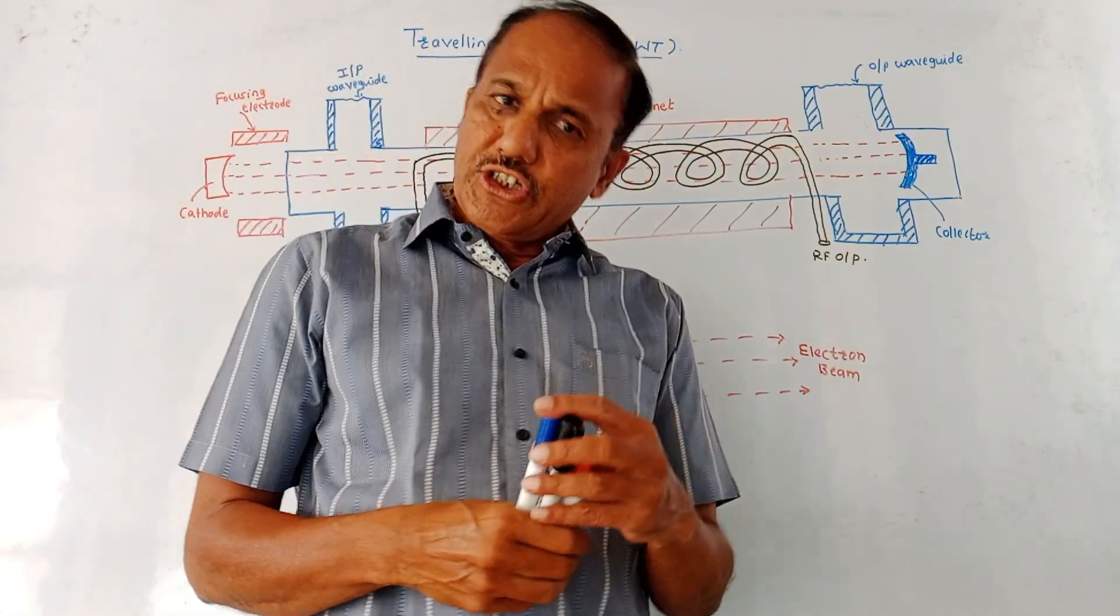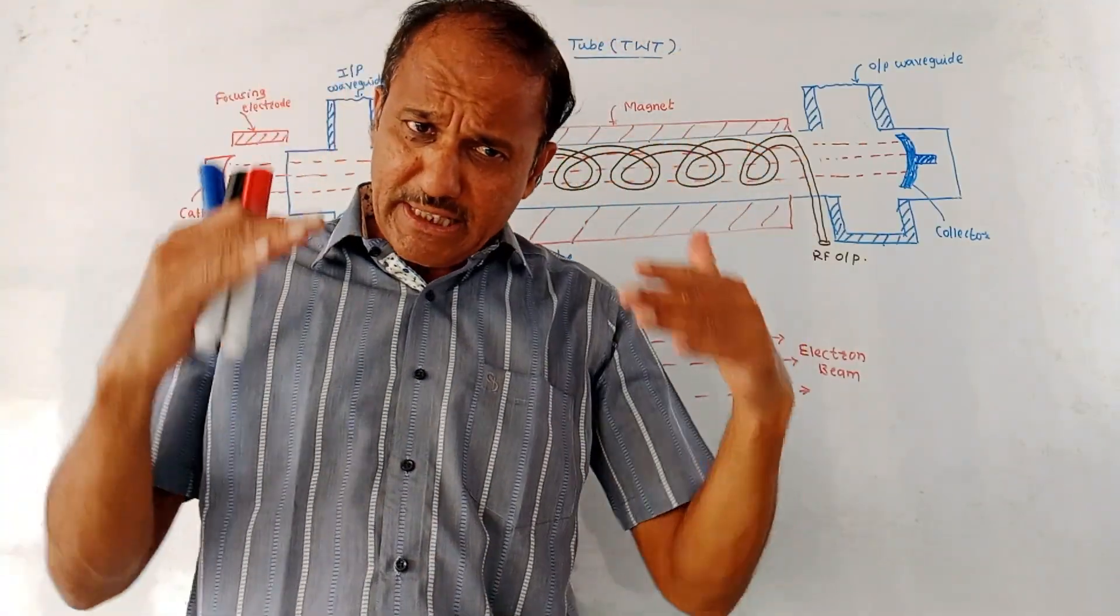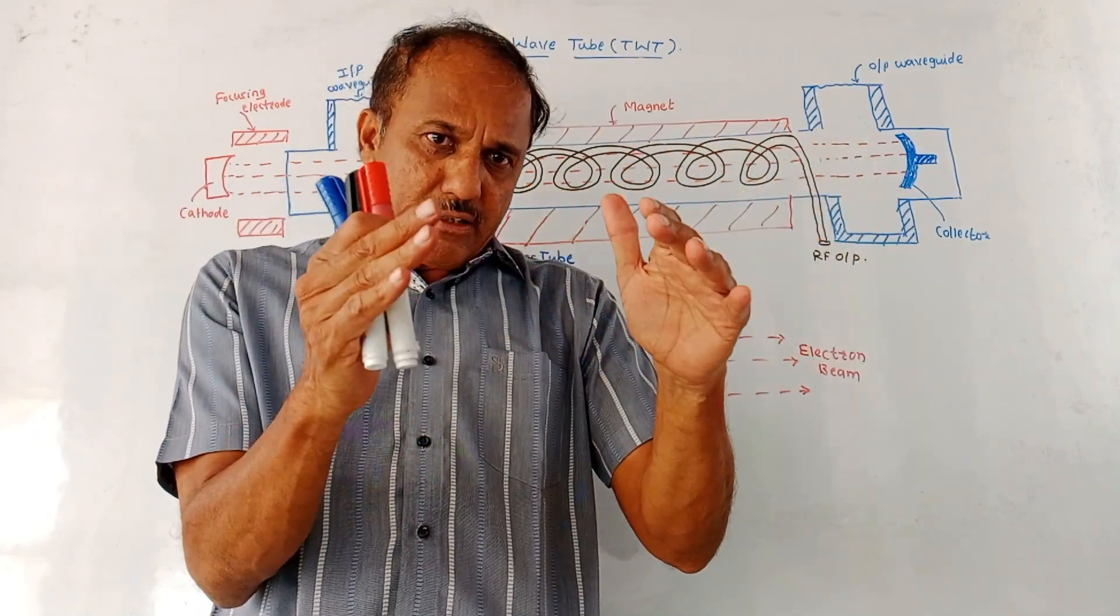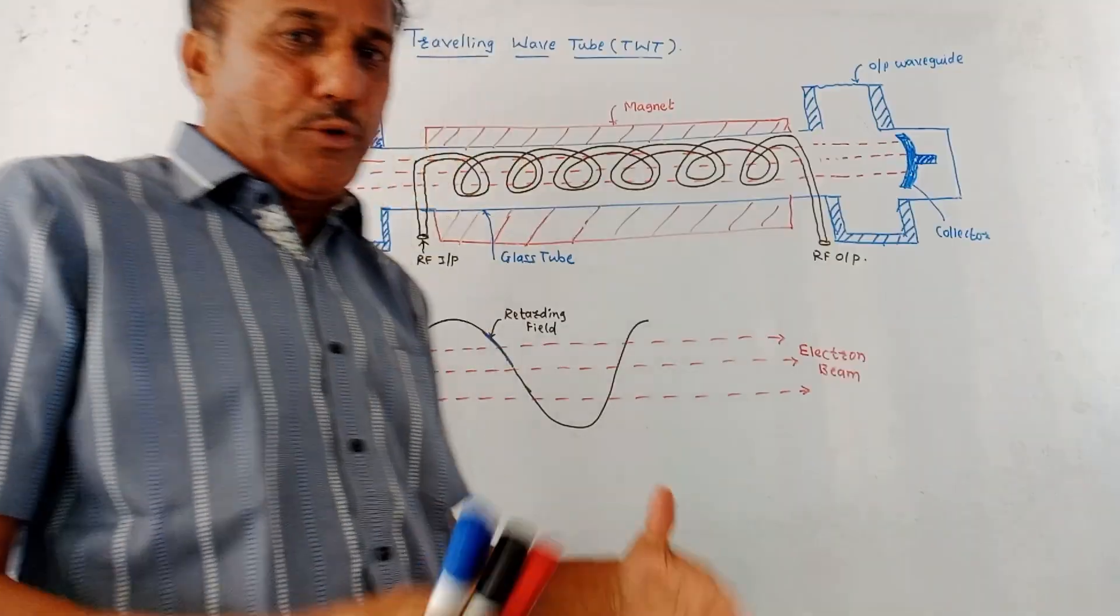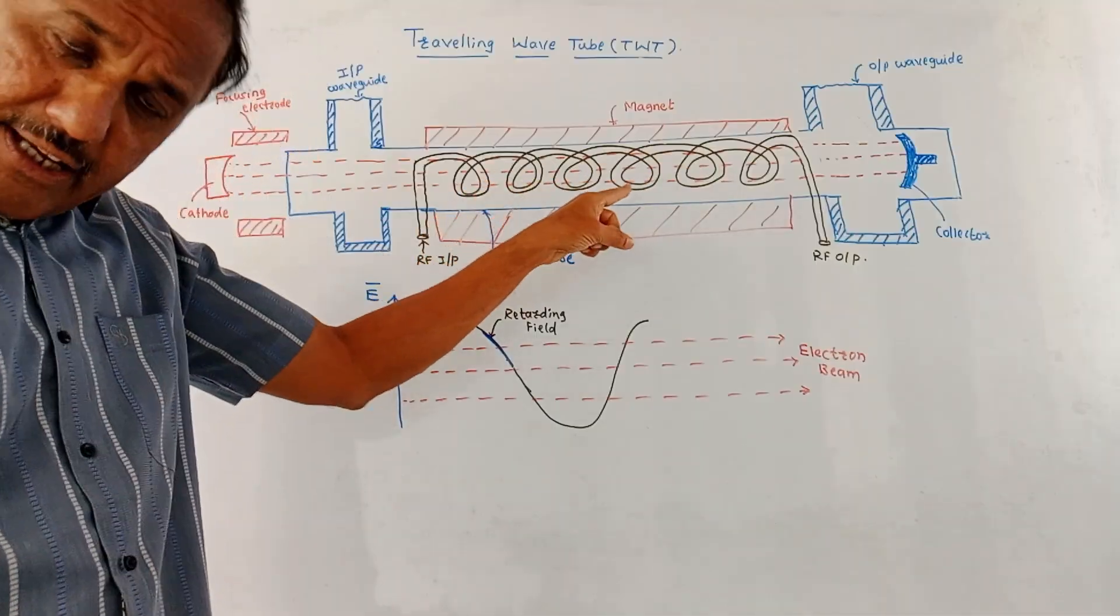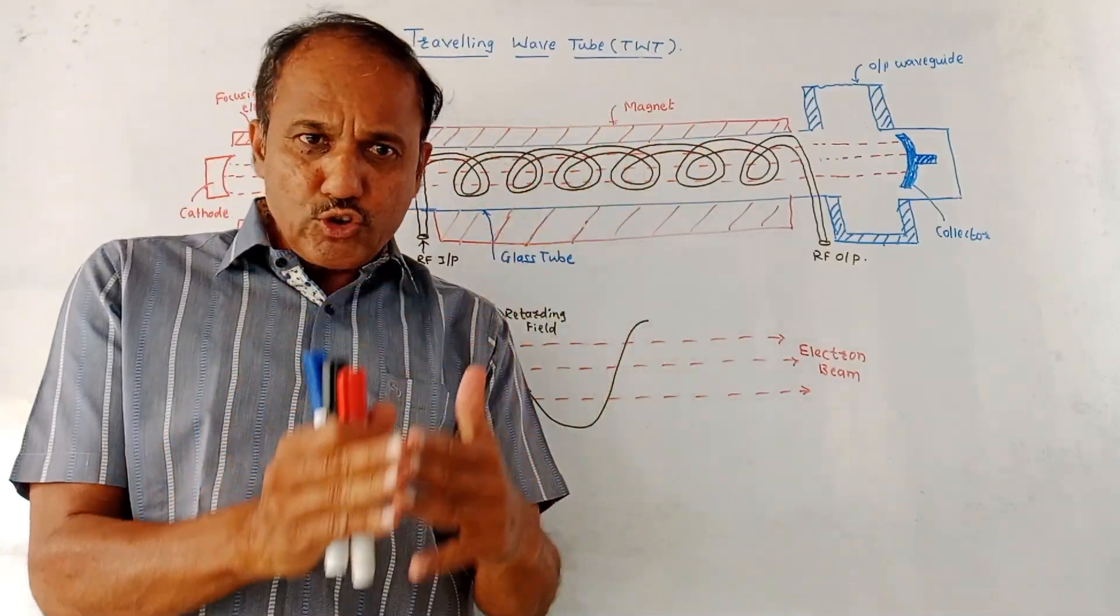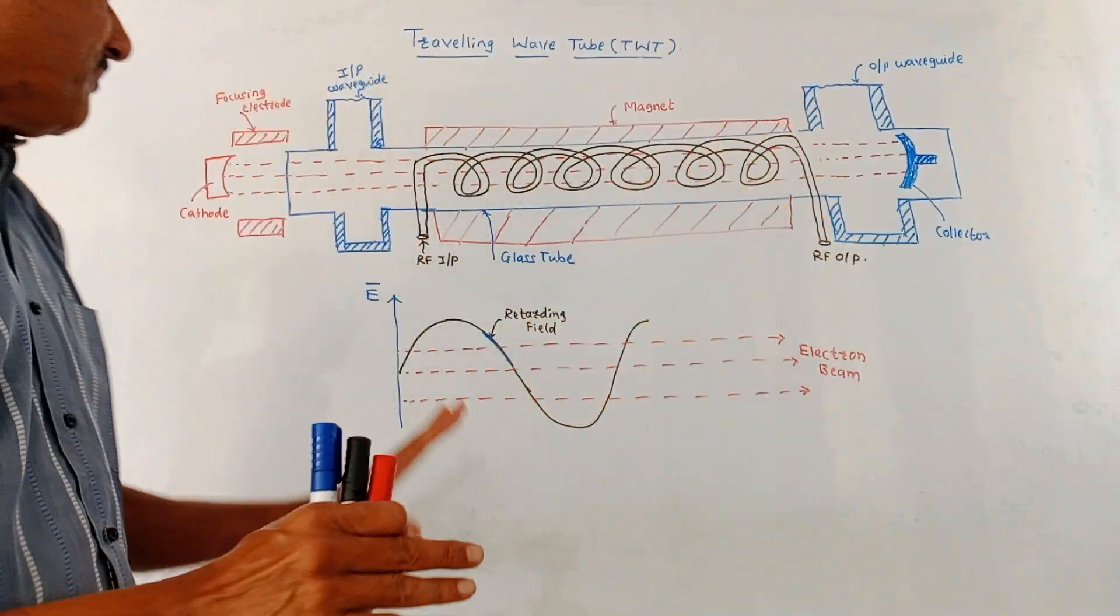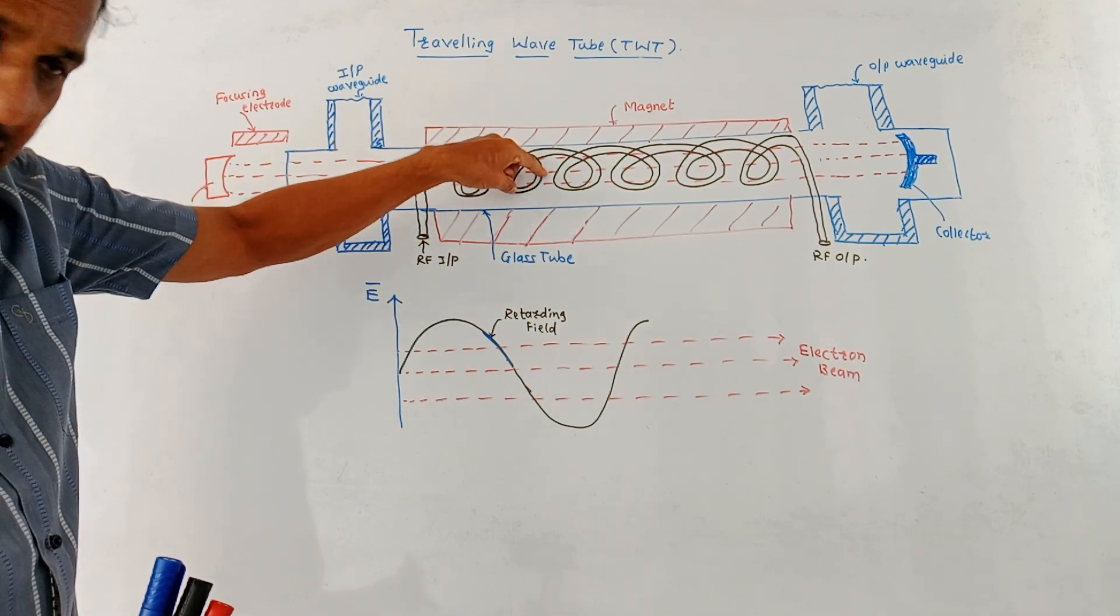Now let us discuss the construction and working of traveling wave tube, that is TWT. The basic principle remains same. There should be formation of bunches so that electrons, whenever they are forming bunches, they are getting amplified. So you are getting amplified micro signal at the output. As we discussed, this is the helical coil, which is acting as a slow wave structure. We have to make use of slow wave structure so that there should be proper interaction between the two fields. Now at one end, we are applying RF input signal at one end of this helical coil.